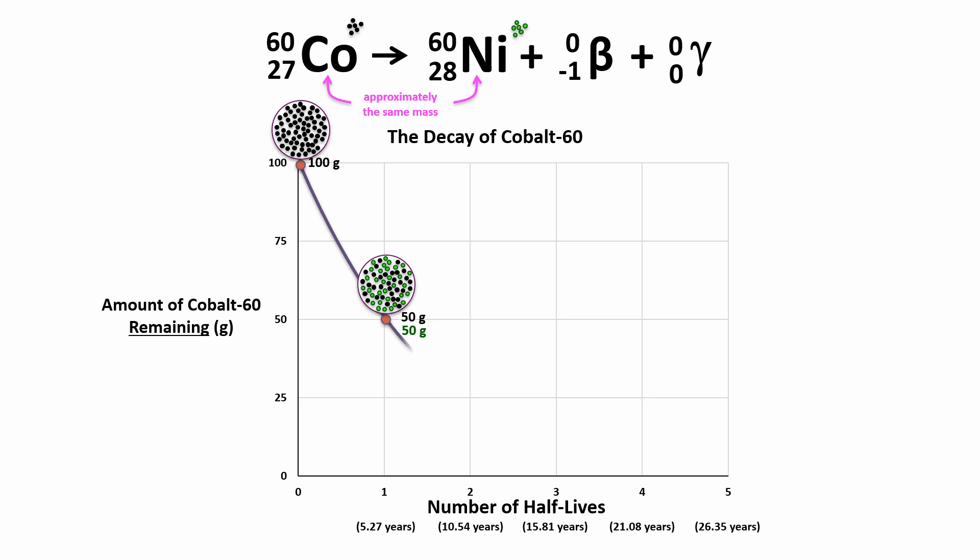After another 5.27 years, that is 10.54 years later, half of the remaining cobalt-60 will decay, so you'll be left with only 25 grams of cobalt-60. Your sample will contain 25 grams of cobalt-60 and 75 grams of nickel-60.